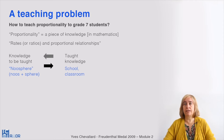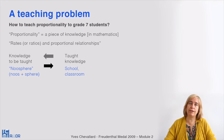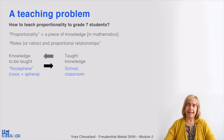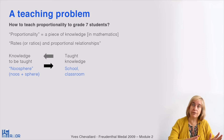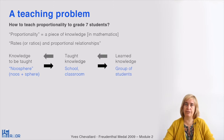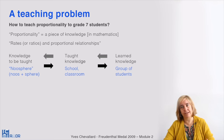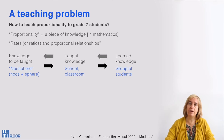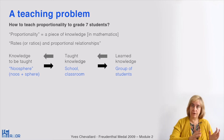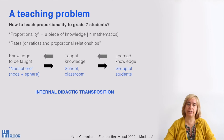This difference is difficult to express if we use only the word 'knowledge,' which is uncountable in English. It would be better to say 'different taught knowledges' with an S, but the grammar doesn't let us do it. The teaching problem consists in asking the way to pass from the knowledge to be taught to the taught knowledge, and then — what is also important — to obtain good learned knowledge, a new entity that does not necessarily coincide, as all teachers know, with the taught knowledge.